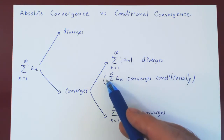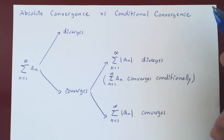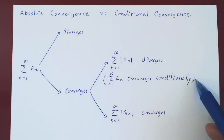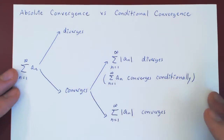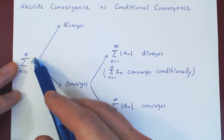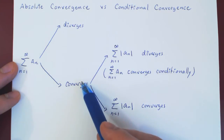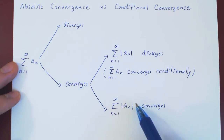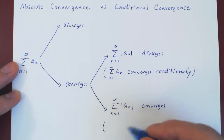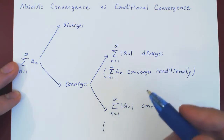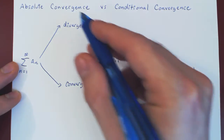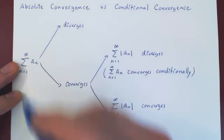In the other case, when the series converges and the series of the absolute value also converges, we say we have absolute convergence, and therefore we say that the series converges absolutely.